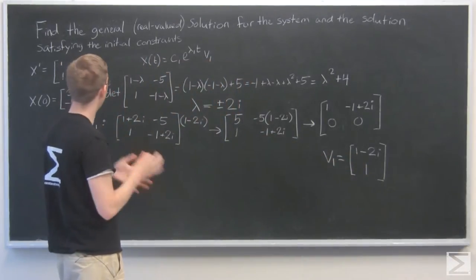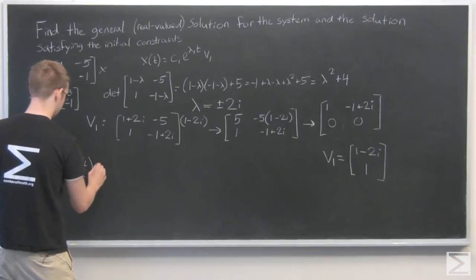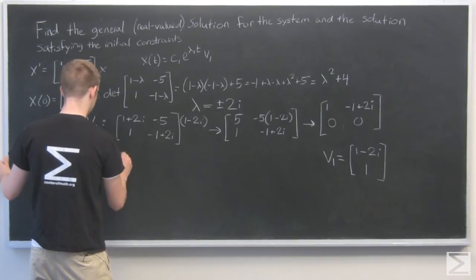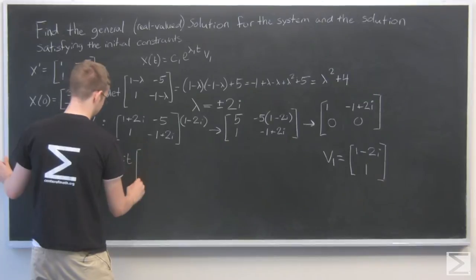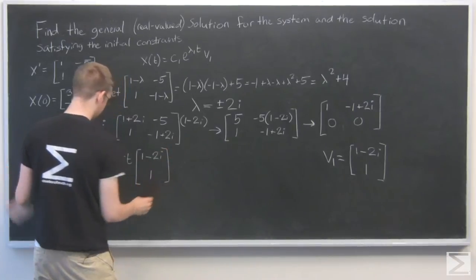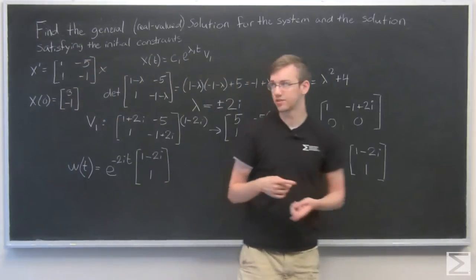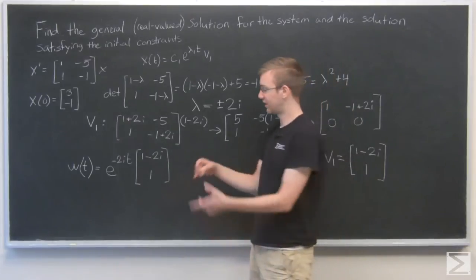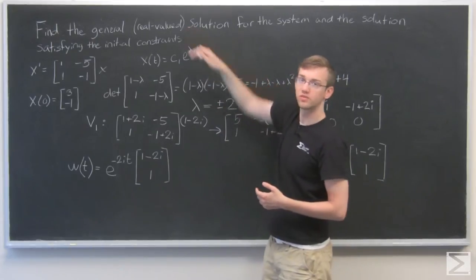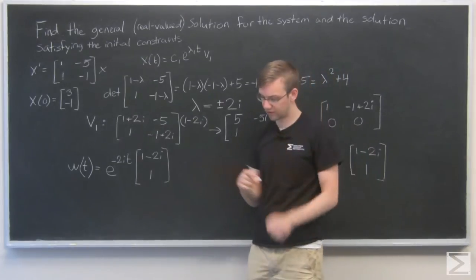Okay, that gives me one complex-valued solution. I'm going to call it w, where w(t) equals e^(-2i*t) times the vector [1-2i, 1]. Because complex eigenvalues are a special case, we have a way of dealing with this and getting rid of those i's that are so nasty and making it into a real-valued solution. And what we do is we start with this, and then we're going to use Euler's formula.